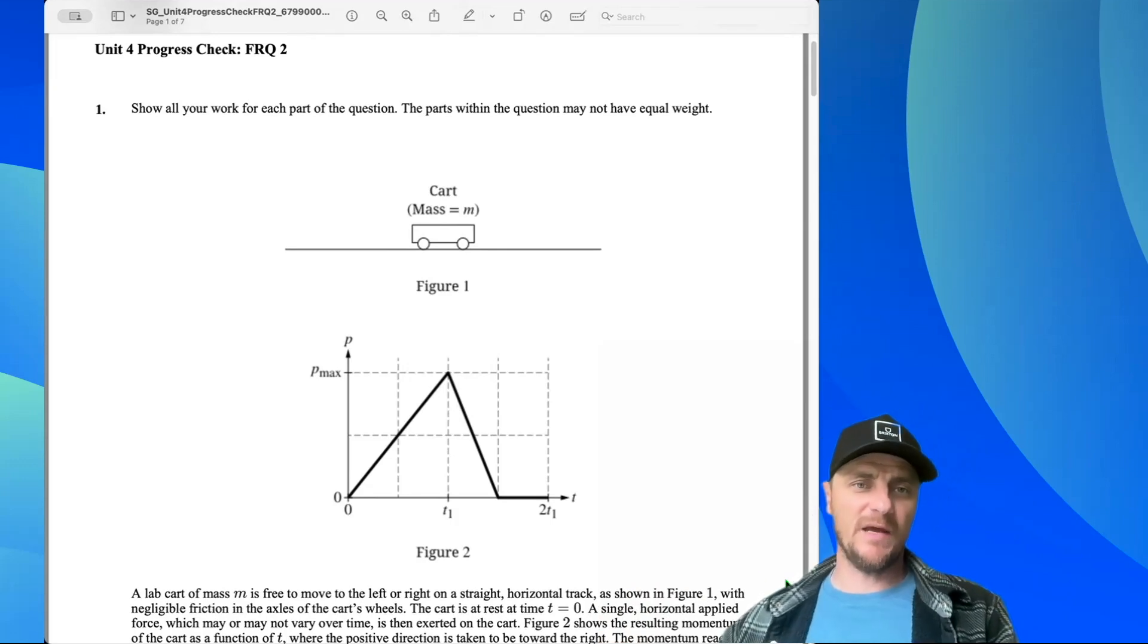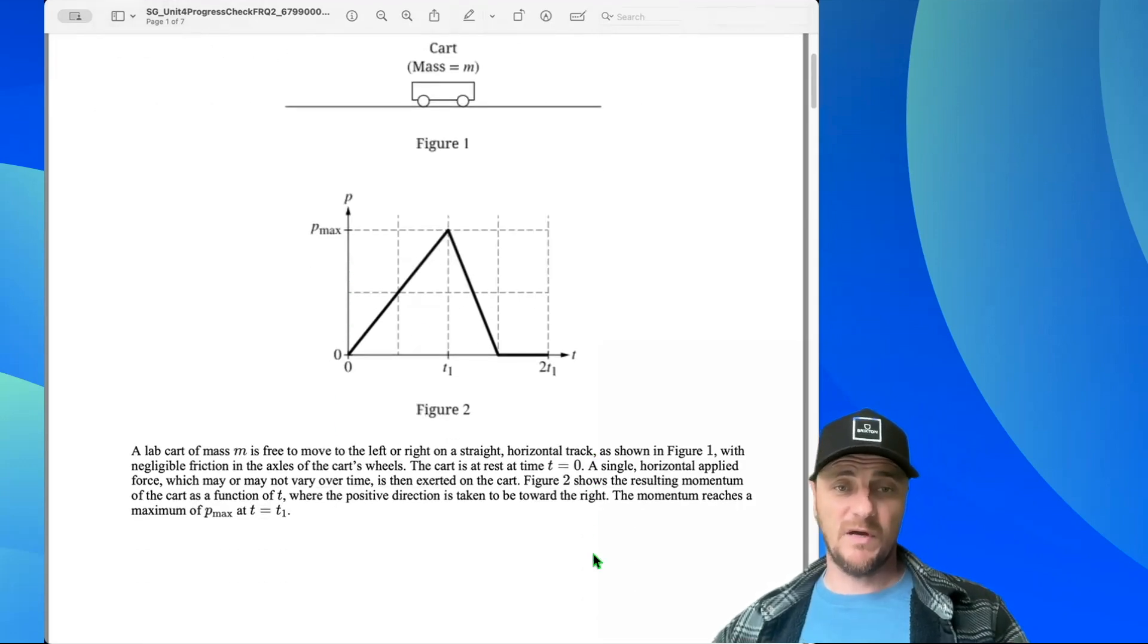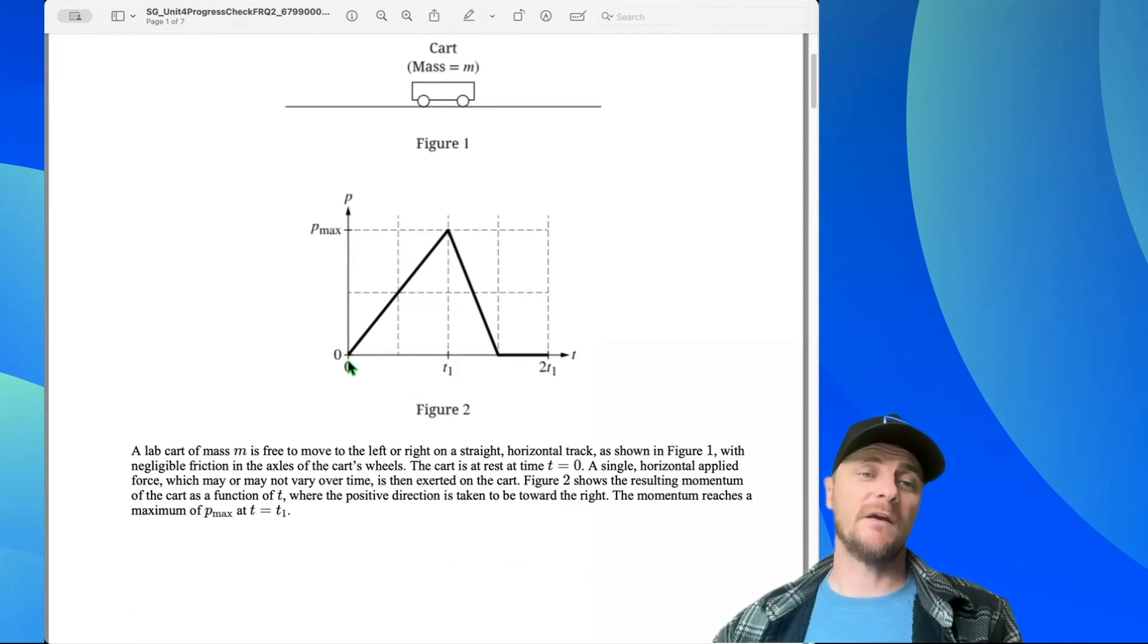We have this cart of mass M and a graph plotting its momentum versus time. We have a bunch of words. Pause it if you want to. Here comes the gist. I've got this cart and it's definitely accelerating from 0 to t1. And then it must be decelerating from t1 to 1.5t1.